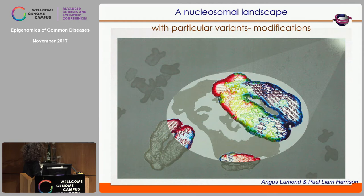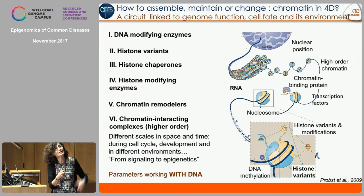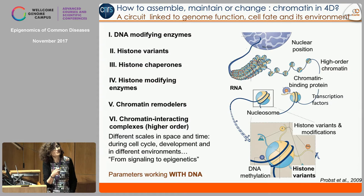The way to look at this is how we can establish the nucleosome landscape at a chromosomal level. The circuit linked to genome function, cell fate and its environment that enables this assembly, maintenance and change of chromatin in 4D involves: DNA modifying enzymes, histone variants, histone chaperones, histone modifying enzymes, chromatin remodelers, chromatin interacting complexes for higher order organization, and RNA. All these parameters are working with DNA.